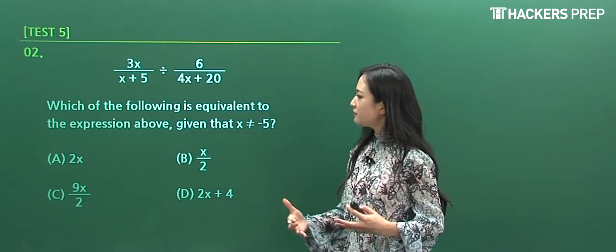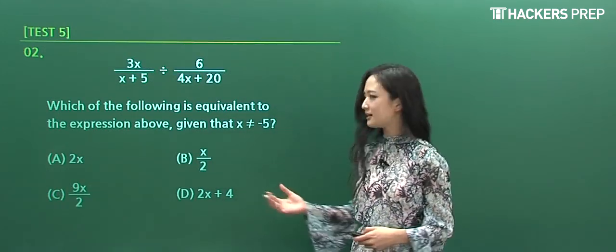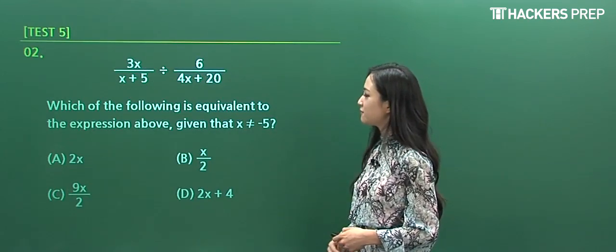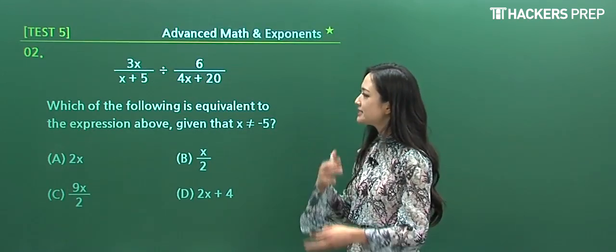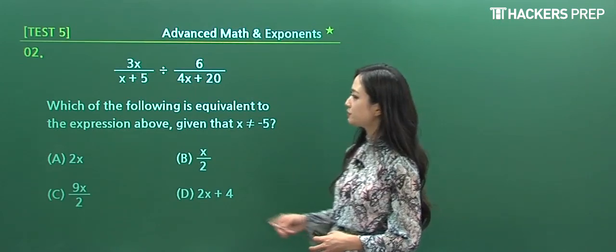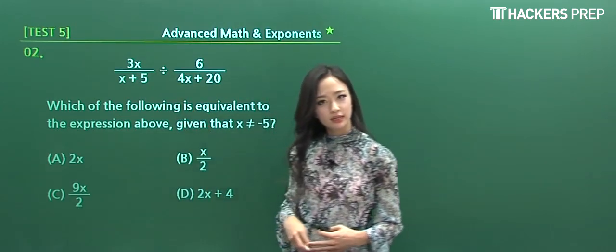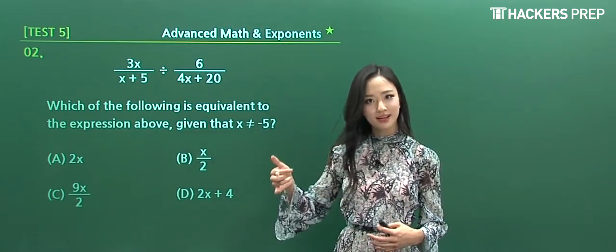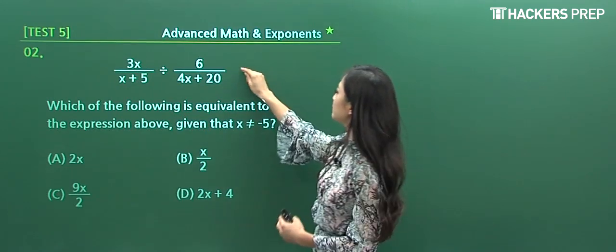Question two: which of the following is equivalent to the expression given, where x is not equal to negative five? All we have to do is simplify this entire expression. What do we do with the division sign? We can change it to multiplication and apply the reciprocal.